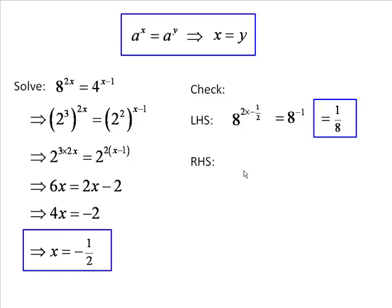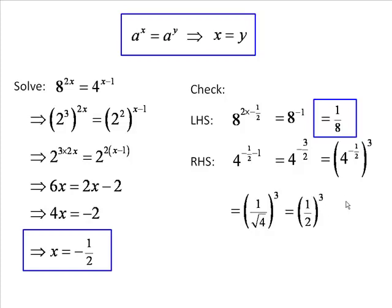What about the right-hand side? Not quite so straightforward. 4 to the power of minus 1 half minus 1, 4 to the power of minus 3 halves, which is 4 to the minus 1 half to the power of 3. 1 over root 4, that's what minus 1 half means, to the power of 3, 1 half to the power of 3, an eighth. Yes, we've got the same thing on both sides, so we've checked that that equation has been correctly solved.